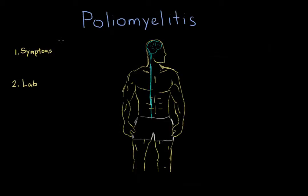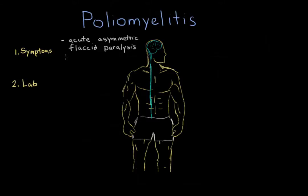The buzzword you're going to encounter for polio is acute asymmetric flaccid paralysis. A patient is having an acute infection with sudden onset. Usually we're thinking of a child — the term 'floppy baby' is often associated with a polio diagnosis, or really any other flaccid paralysis. In polio, children less than six months old are the most commonly affected, though really anybody — adults or children — can be affected.